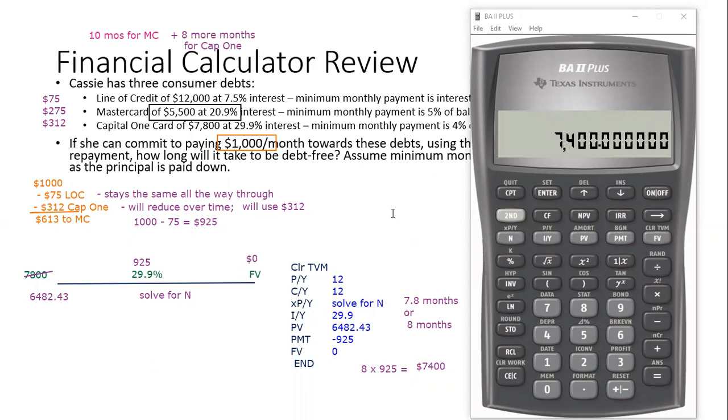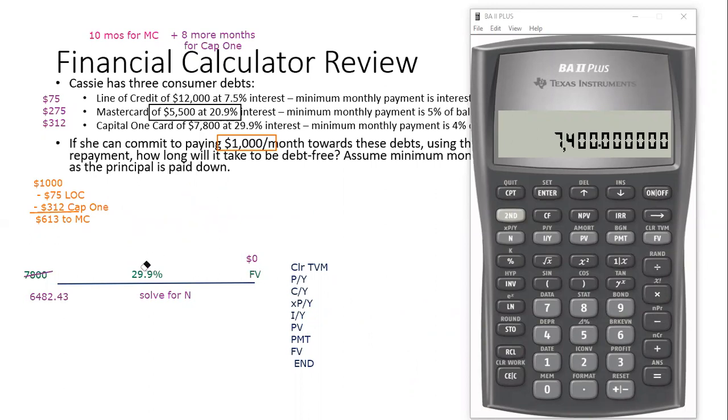Now we're 10 months for the MasterCard, eight more months for the Capital One card. Now it's just a matter of figuring out what's going to happen with the line of credit. The line of credit is going to be easier than what we had to do with either of the last two calculations. For the line of credit, I don't have to worry about calculating a balance after this time has passed, and I have the full $1,000 available.